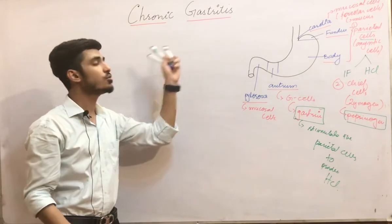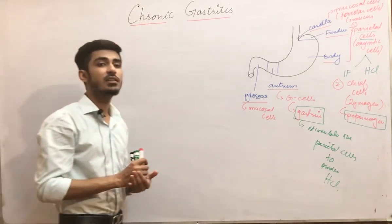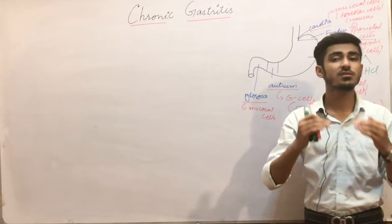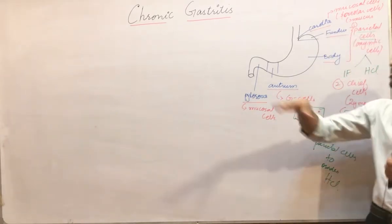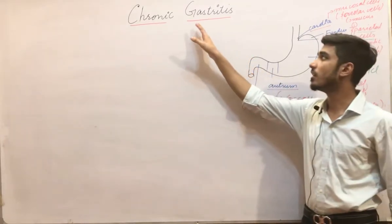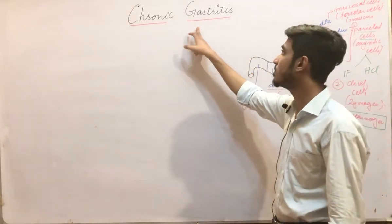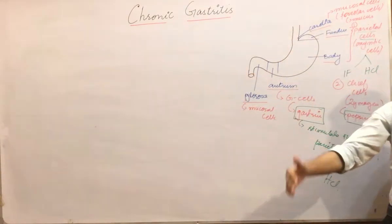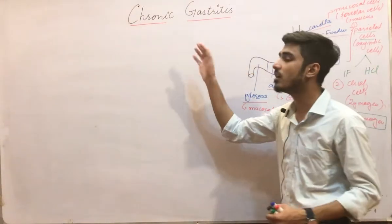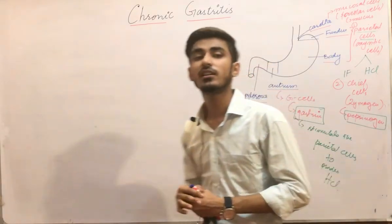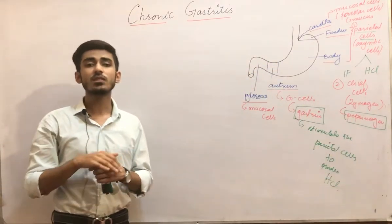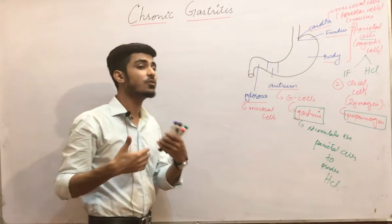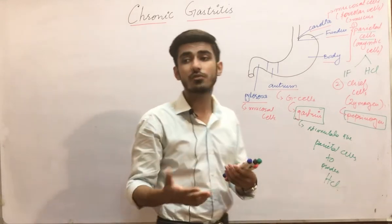Moving on towards chronic gastritis — its name indicates that 'chronic' means persistent for a long time. This means the mucosal inflammation, or inflammation of the stomach mucosa, persisting for a very long time — that is called chronic gastritis. Now, what can be the causes of chronic gastritis?